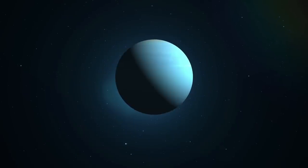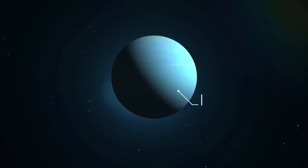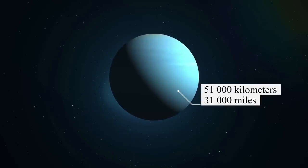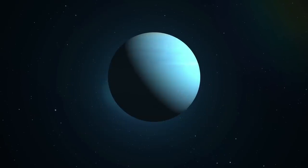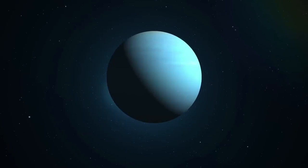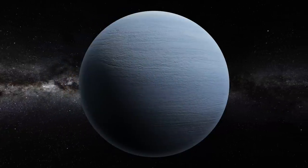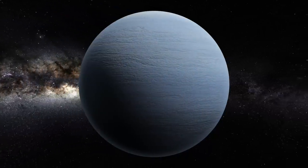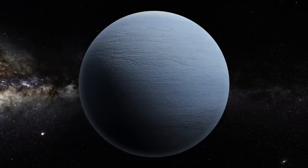Uranus is one of the four giant planets. Its diameter, which is four times that of the Earth, reaches more than 51,000 kilometers or 32,000 miles. Its axis of rotation is inclined by more than 90 degrees and gives the impression that it is rolling on its orbit. This gives it the nickname of the planet lying down.